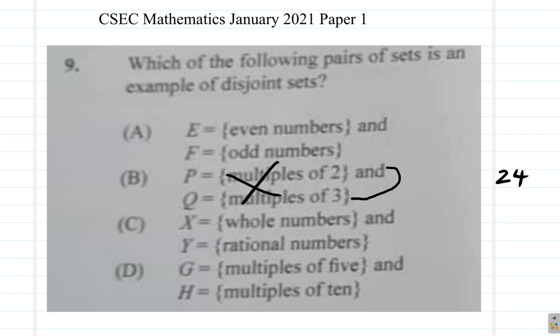Whole numbers and rational numbers. Now a whole number like 5, is it also a rational number? Yes, because you can write it as 5 over 1, 5 divided by 1. So C is not the correct answer. You're looking for disjoint sets. These are joint so far.